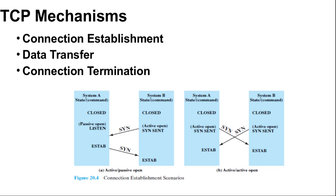When the synchronization flag is set, the segment is essentially a request for connection. To initiate a connection, an entity sends a synchronization with SN equal to x, where x is the initial sequence number. The receiver responds with synchronization SN equal to y, AN equal to x plus 1. If the two sides issue crossing synchronizations, this is done by setting both the synchronization and acknowledgement flags. The acknowledgement indicates the receiver is now expecting to receive a segment beginning with data octet x plus 1, acknowledging the synchronization which occupies SN equal to x. Finally the initiator responds with AN equal to y plus 1. Both sides respond with synchronization and acknowledgement as shown in the figure.